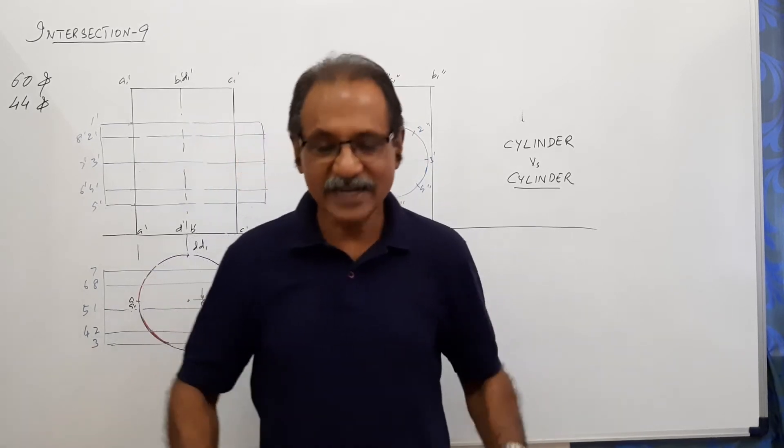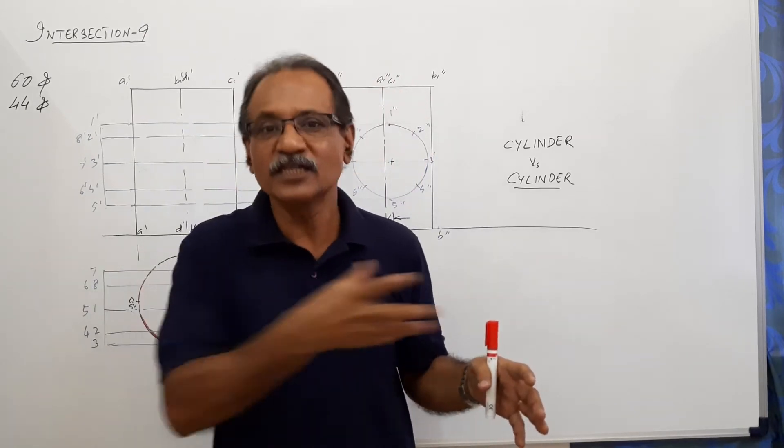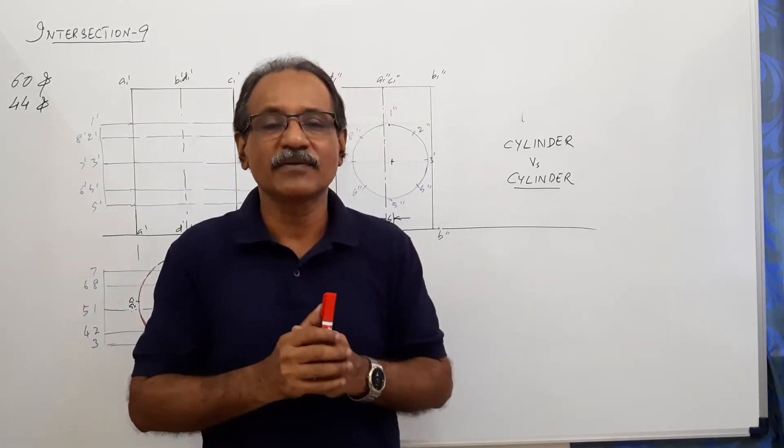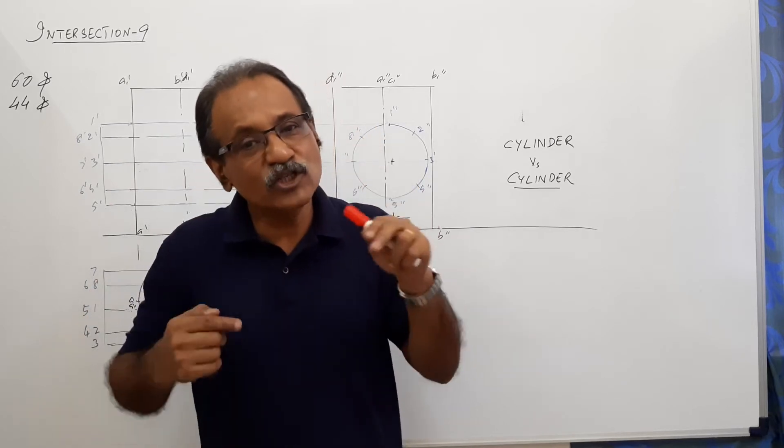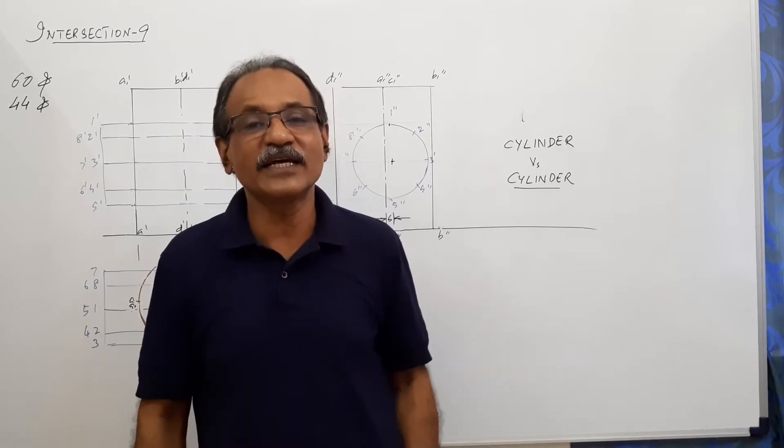I repeat, a vertical cylinder is standing 60 mm diameter. It is penetrated by a horizontal cylinder 44 mm diameter. The axis of the horizontal cylinder does not cut the axis of the vertical cylinder but they are 6 mm away.